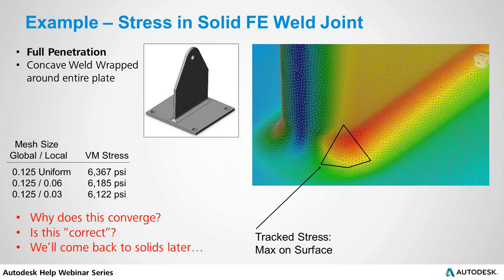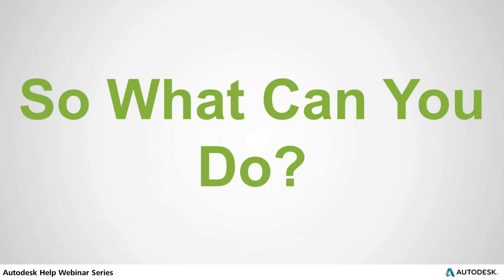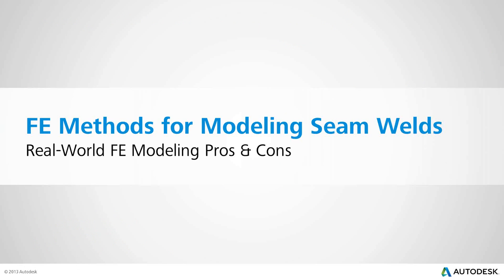The worst thing you can do in analysis is change your model to make answers come out the way you think they ought to be. Let the analysis model the physics you know to be real. If you're not sure how to handle something, that's what support is for. Don't force the model to give a predetermined answer — that's almost wasting the time in FEA. So what can you do if you have real welds and want to find out what's going on? Let's talk about methods for modeling seam welds.